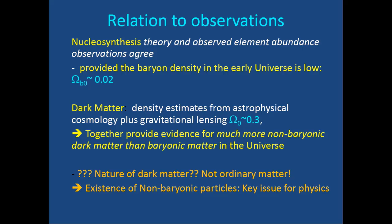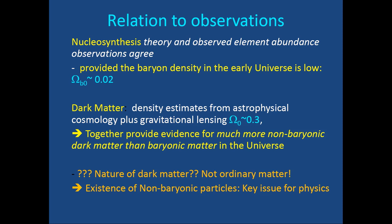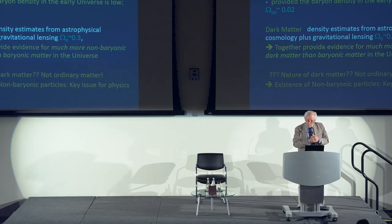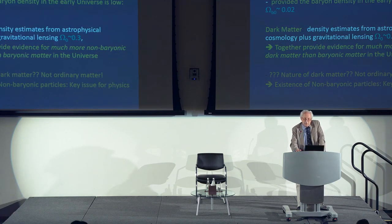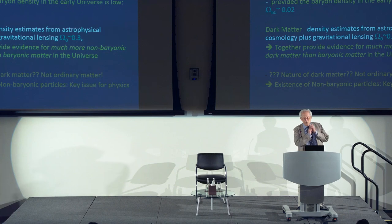Nucleosynthesis theory agrees with observed element abundances only if the baryon density is Ω_b ≈ 0.02, but dark matter density estimates from astrophysical cosmology give Ω_dm ≈ 0.3 — far more dark matter than baryons. Together this provides strong evidence for much more non-baryonic dark matter than baryonic matter. We do not know what this dark matter is; it is not ordinary matter. This is a key issue for physics.